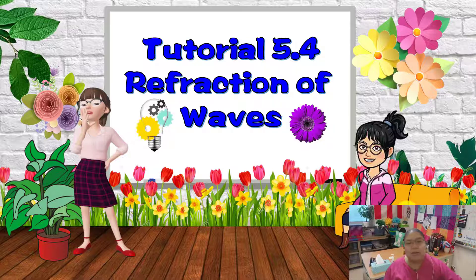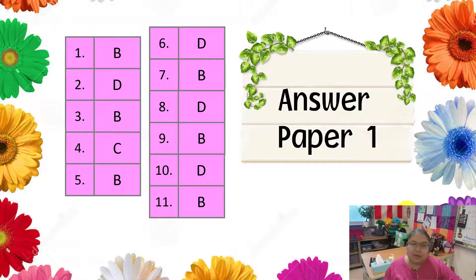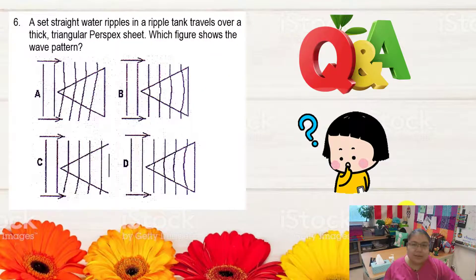Hi students, today we discuss Tutorial 5.4: Refraction of Wave. Hope you finished it, so now we check the answers. The first paper has objective questions with 11 questions. I want to discuss one question involving a triangle shape for refraction of the wave — how the wave travels when it goes to the shallow part and the deep part — because we never did any exercise about this shape before.